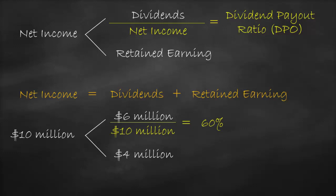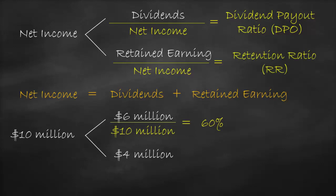Then, we would need to know what the percentage of the retained earnings the company kept in order to grow from net income. So, in our example, we would divide retained earnings by net income, which is called the retention ratio. In our example, we would divide retained earnings of $4 million by net income of $10 million, which will give us a retention ratio of 40%.